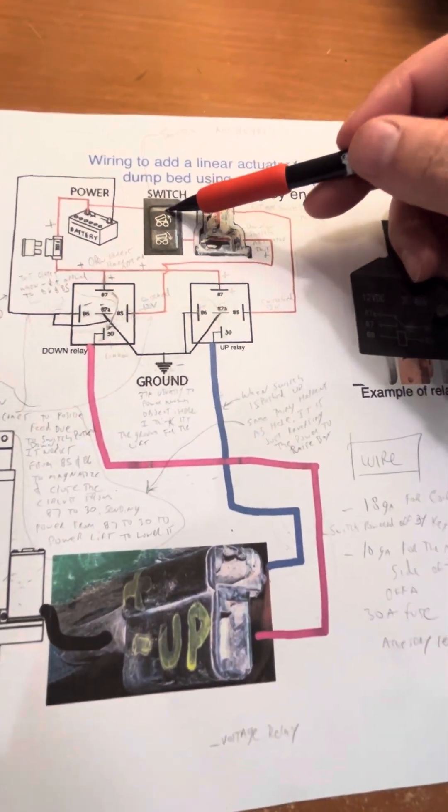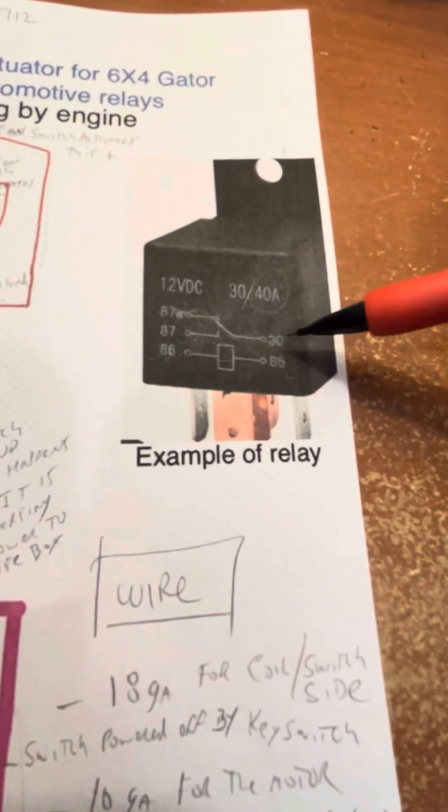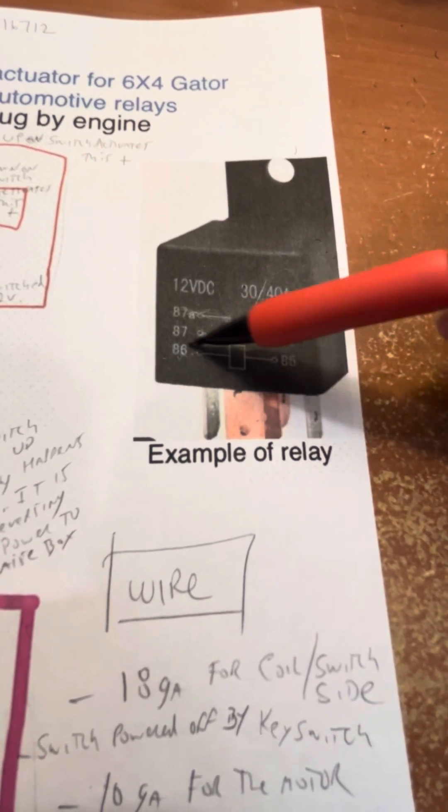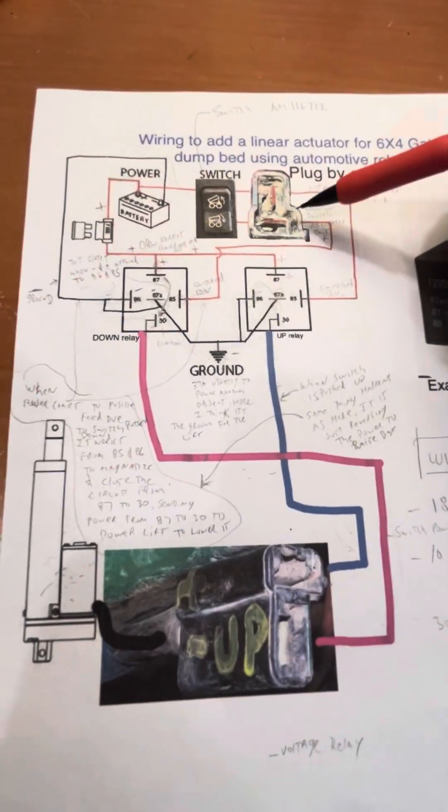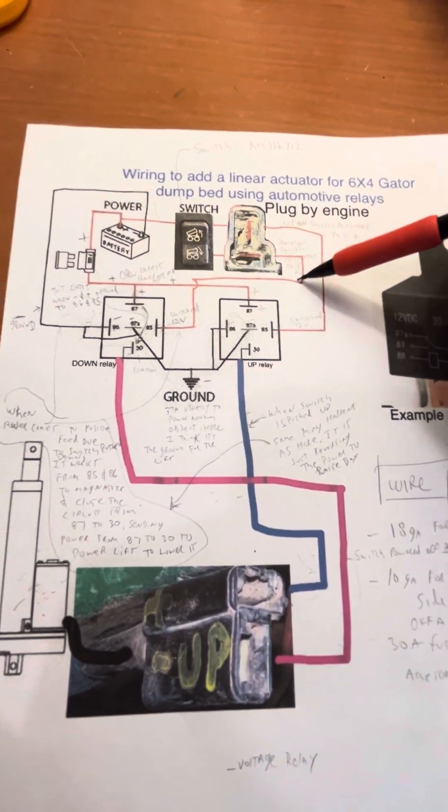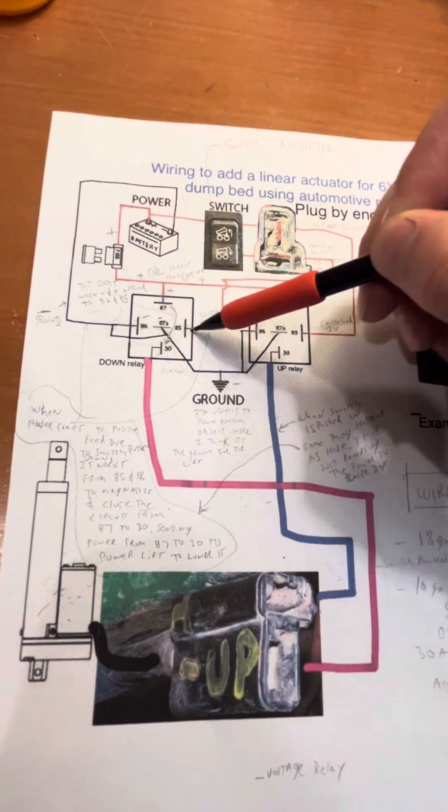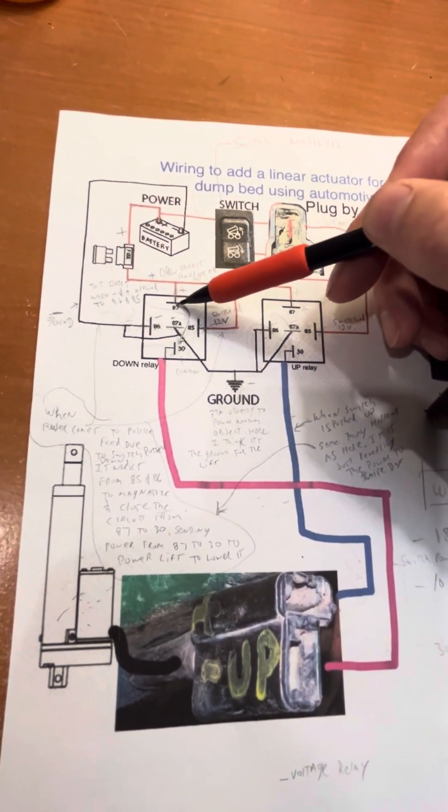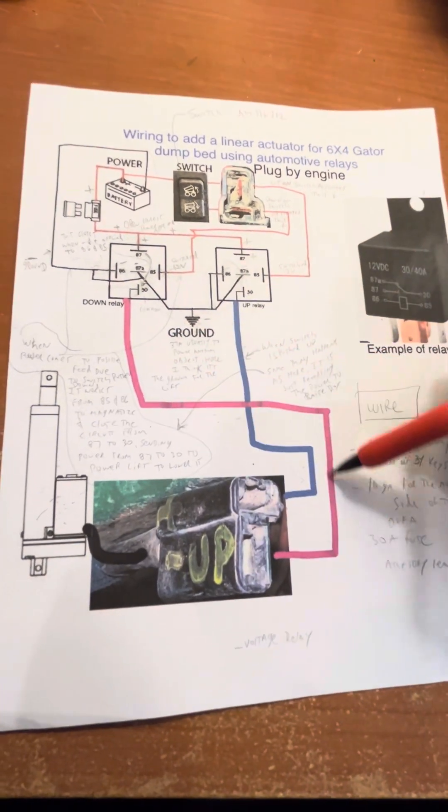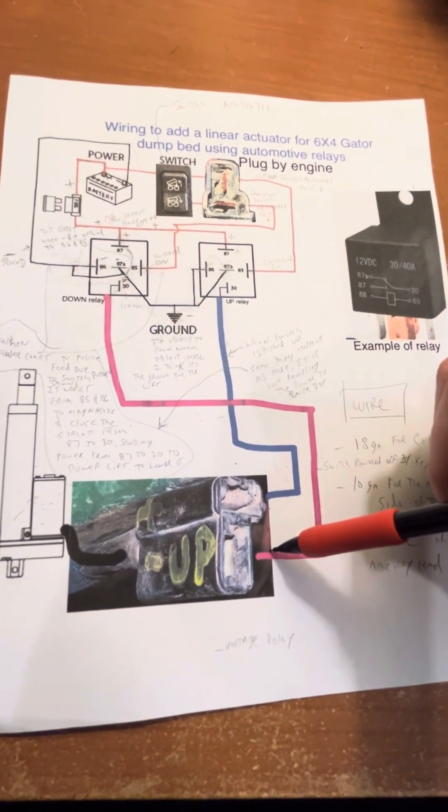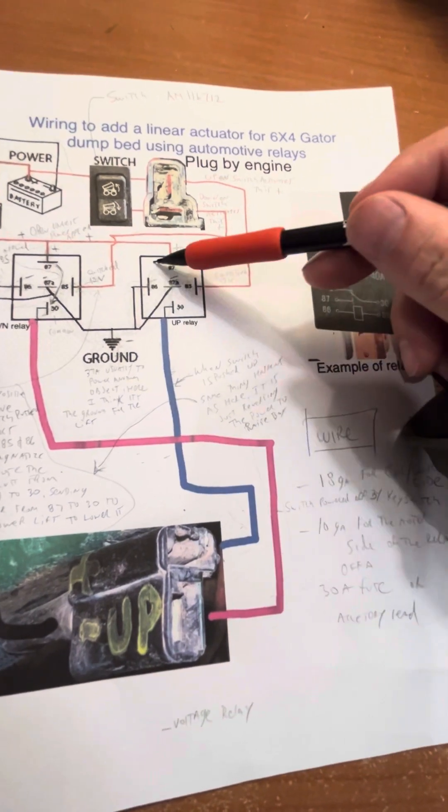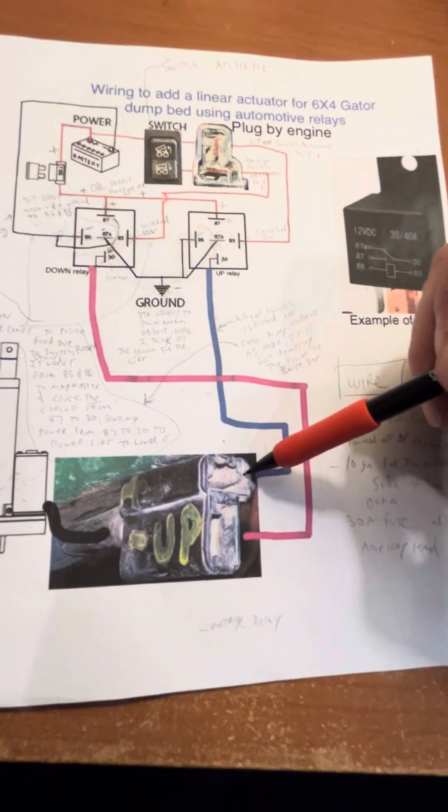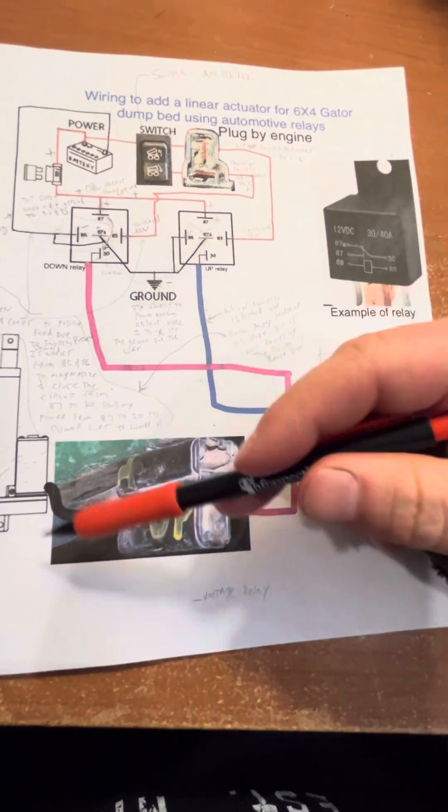So when we press the button, the 30 has the switch that moves to the 87. So now you're going from 87 to 30, like I stated. So like we're pressing down here, this sends a positive to here. Here does the magnet and now the positive jumps to here. So this shoots a positive down. Remember on this relay, it's always on ground. So right now that's ground. So it's going to go one way.